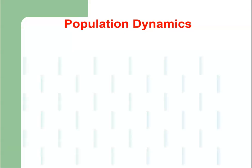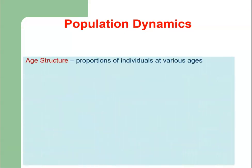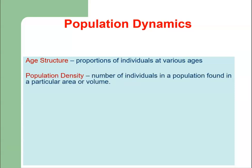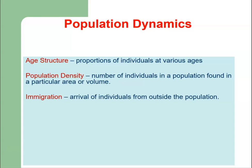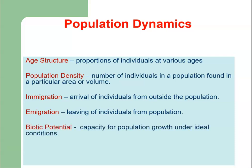Regarding population dynamics, we discuss age structure, where proportions of individuals at various stages are discussed. Then we have population density, which is the number of individuals in a population found in a particular area or volume. We have immigration, where individuals come from outside into the population, and emigration, where individuals leave and go outside of the population.